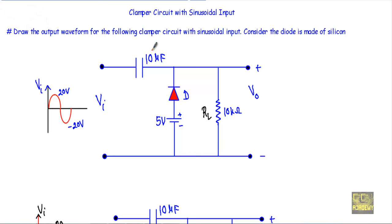In this video I will show you an example of a clamper circuit with sinusoidal input and draw the output waveform. This circuit contains a capacitor of 10 microfarad, a load resistor of 10 kilohm, a silicon diode, and a 5 volt bias voltage. At the input terminal we are applying a sinusoidal input with positive peak of 20V and negative peak of minus 20V. We are calculating the output across the output terminals.